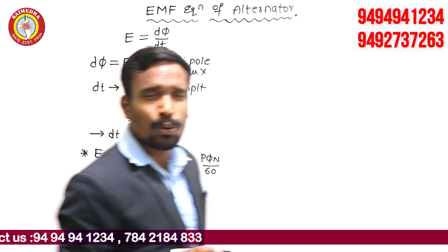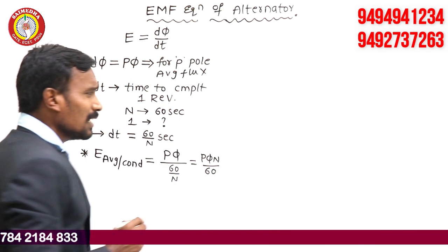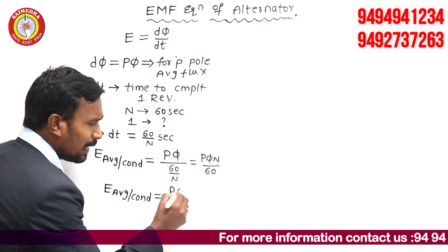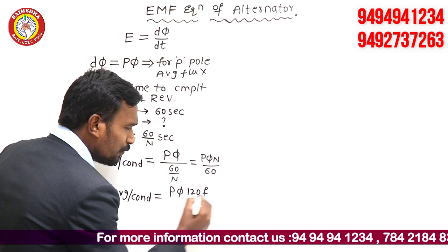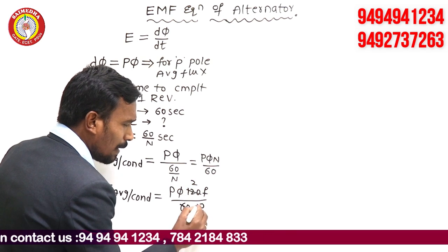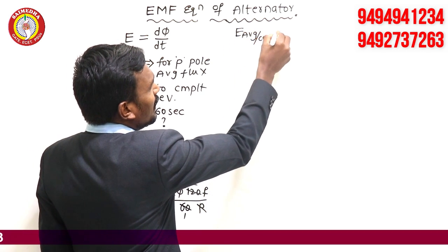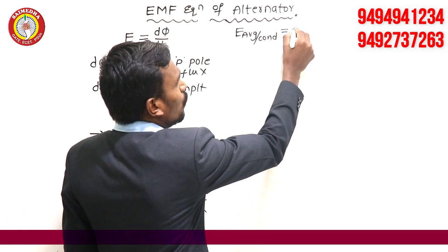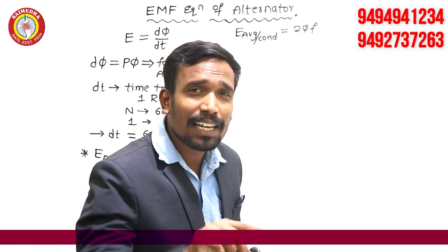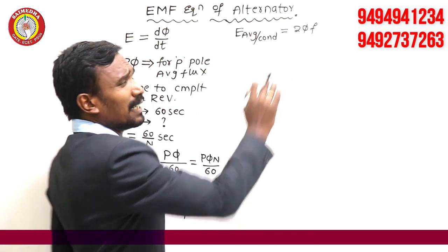This is the basic EMF value — E average per conductor equals pΦN/60. Now, substituting N = 120f/p, we get E average per conductor equals pΦ × (120f/p) / 60. The p cancels, and this simplifies to E average per conductor equals 2Φf. This same result is derived in DC machines as well, just expressed differently.